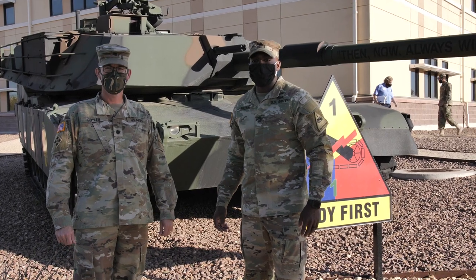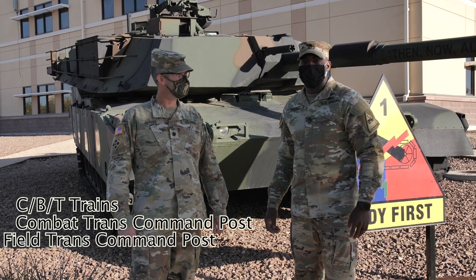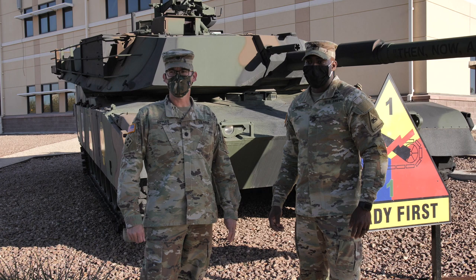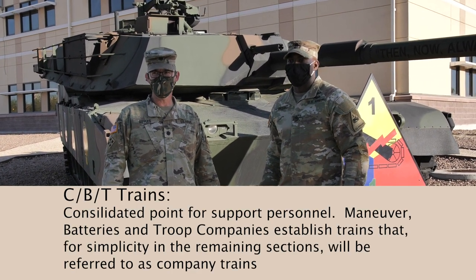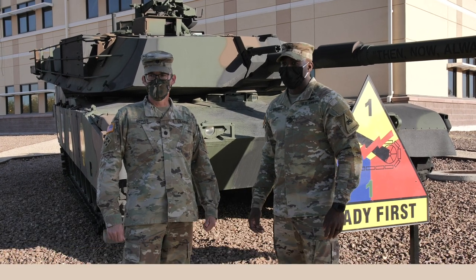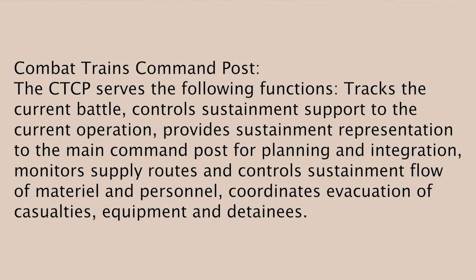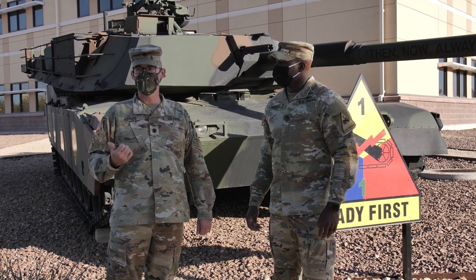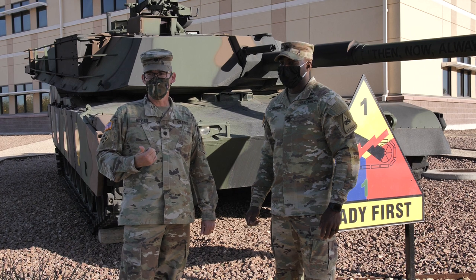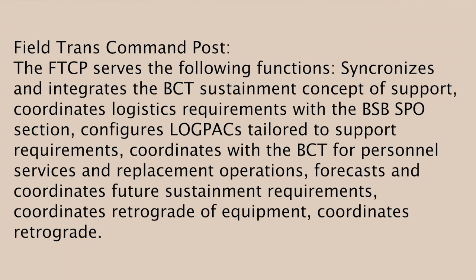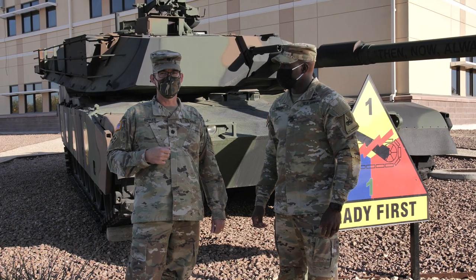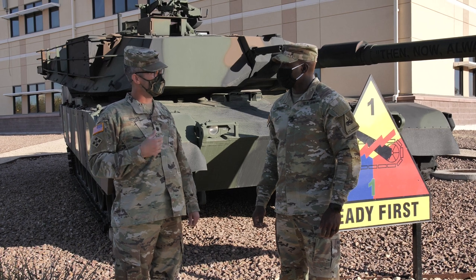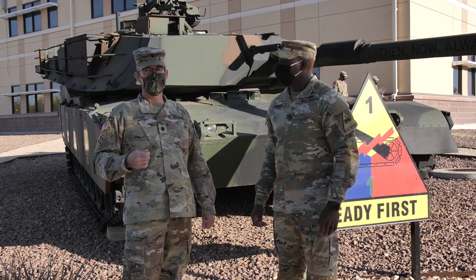Now we'll go into the four sustainment nodes, which are known as the company trains, combat trains command post, field trains command post, and the BSA. The company trains is a consolidated point for support personnel at the company level — you've got your field maintenance team and casualty collection point right there. The combat trains command post is where your UMCP, your role 1, your HHC CP, and your S1 and S4 are located. They're tracking the battle, doing sustainment planning for the main, often augmenting the main during planning efforts, and coordinating evacuation of equipment and casualties. Your FTCP has your distro, your FSC CP, and your CK. They're configuring log packs, coordinating with the SPO, forecasting future requirements, and coordinating retrograde. And then lastly your BSA — that is your BSB in full. All companies, including your role 2, are located in the BSA.